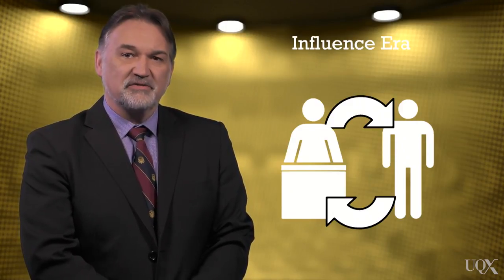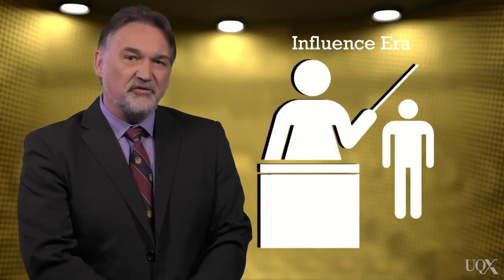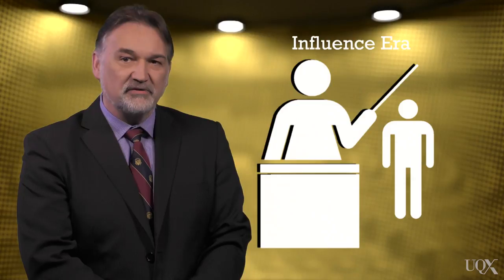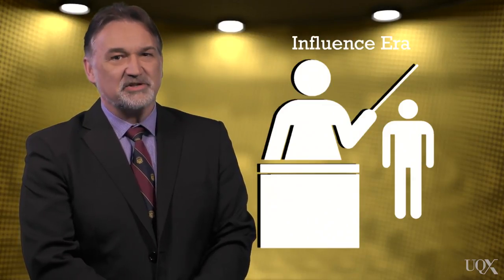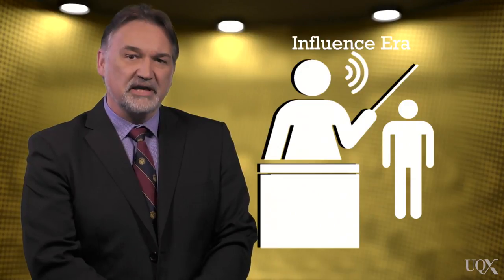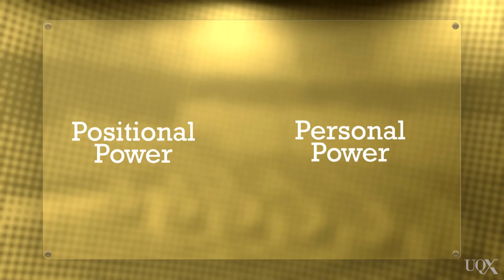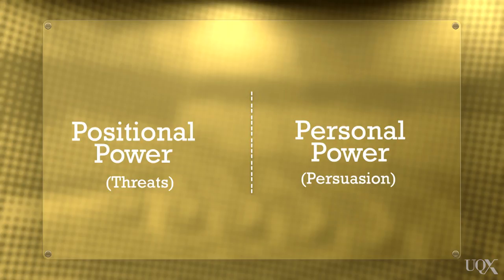Early leadership theories of this period focused upon the punitive or coercive power, often embedded in the positional authority of the leader, and later theories of this era looked more towards the persuasive power, often embedded in a leader's positive personality. This particular era contributed towards recognising the division between positional power and personal power — the difference being that the leader could resort to threat, implied or direct, or persuasion in achieving their goals.